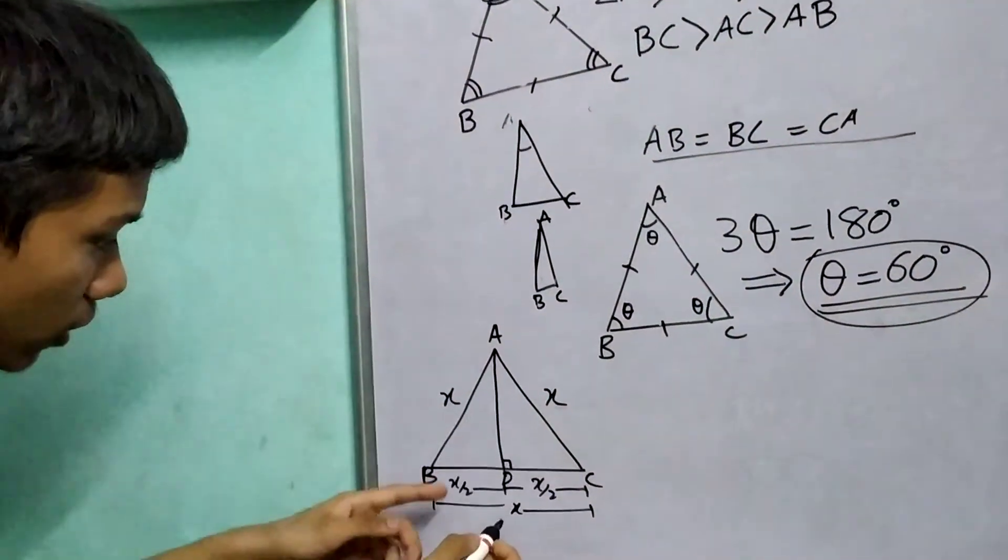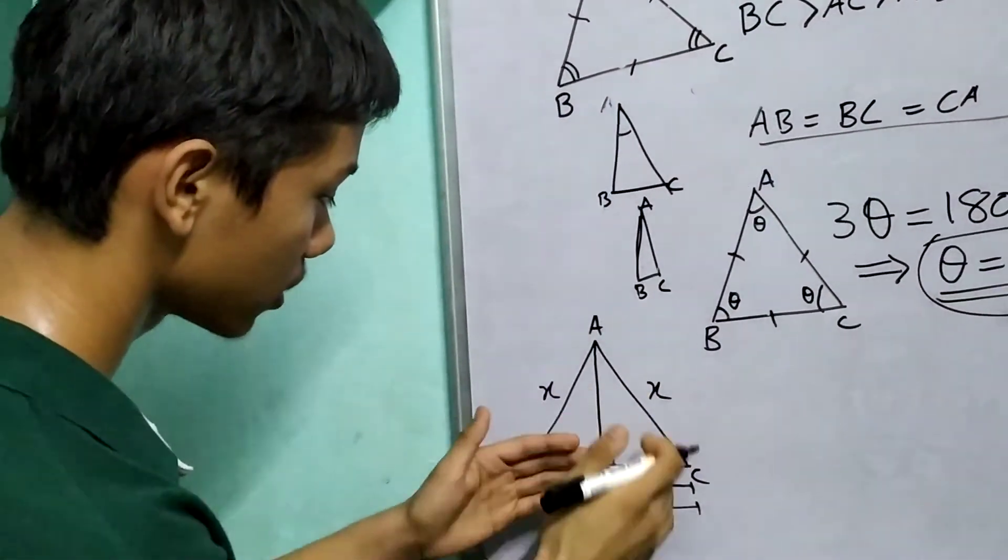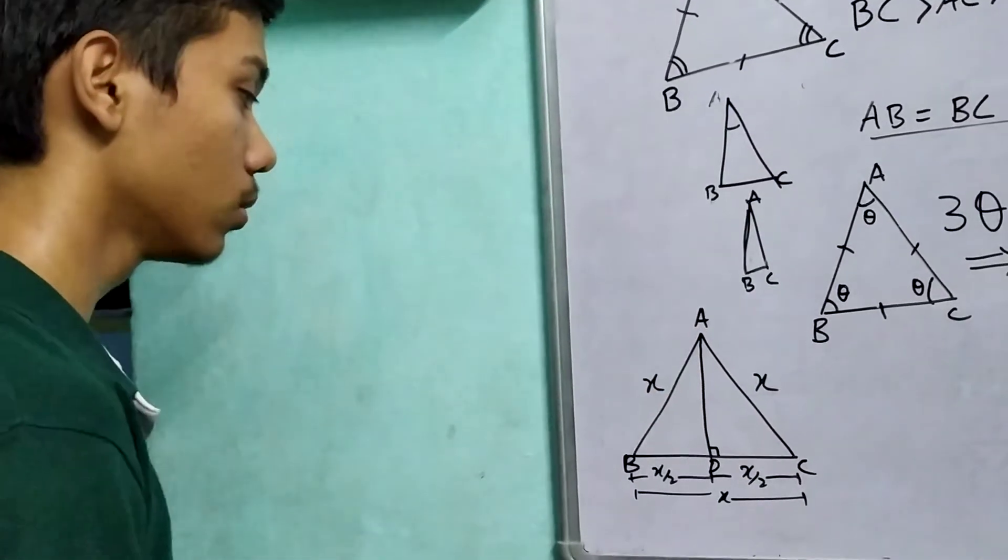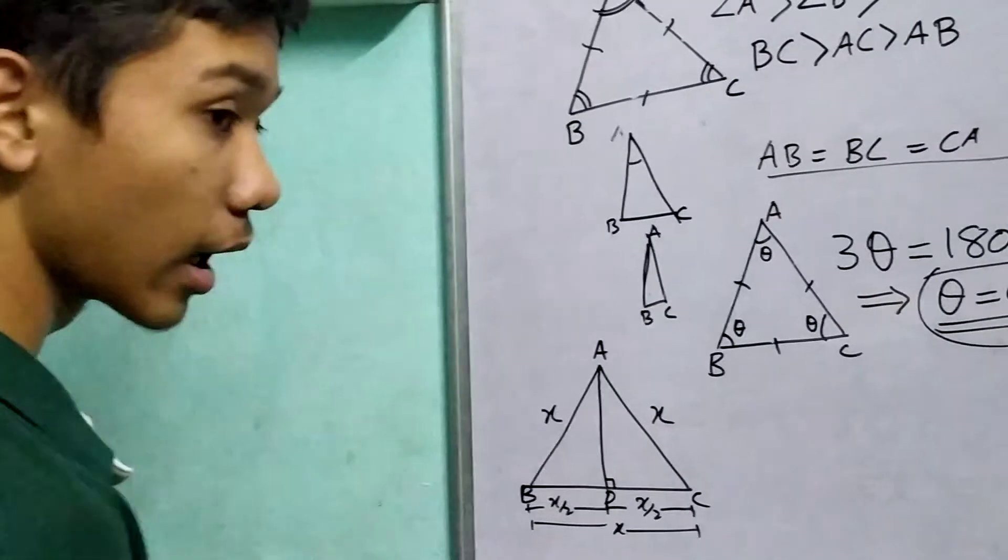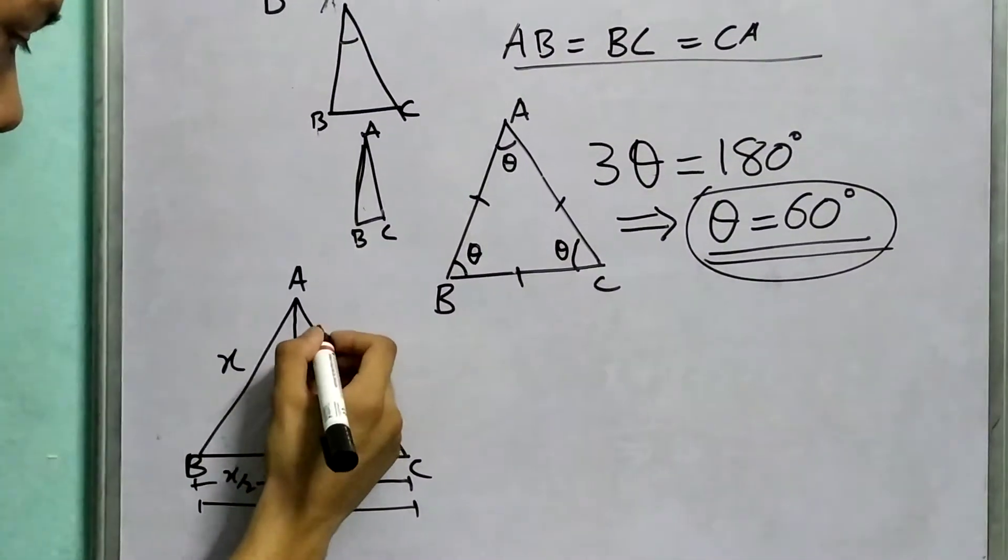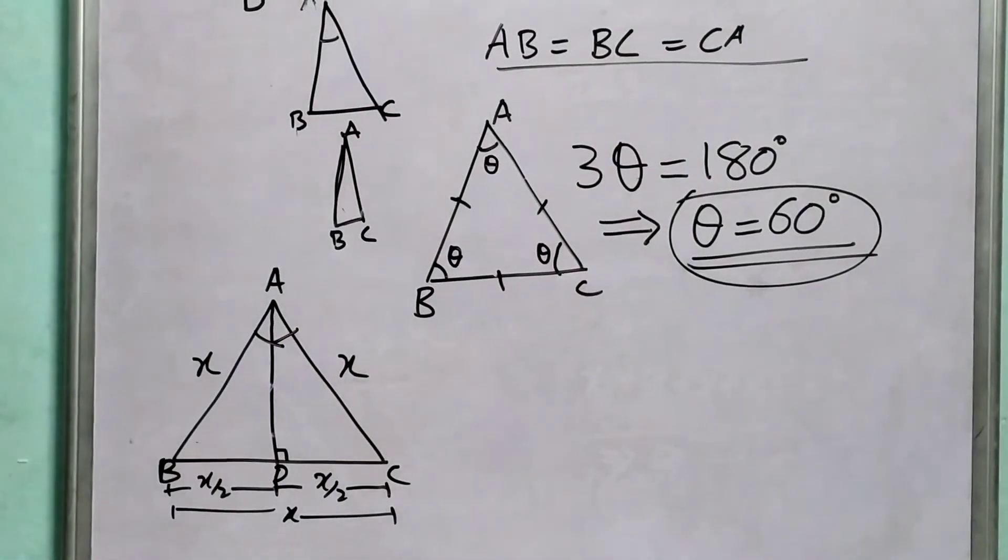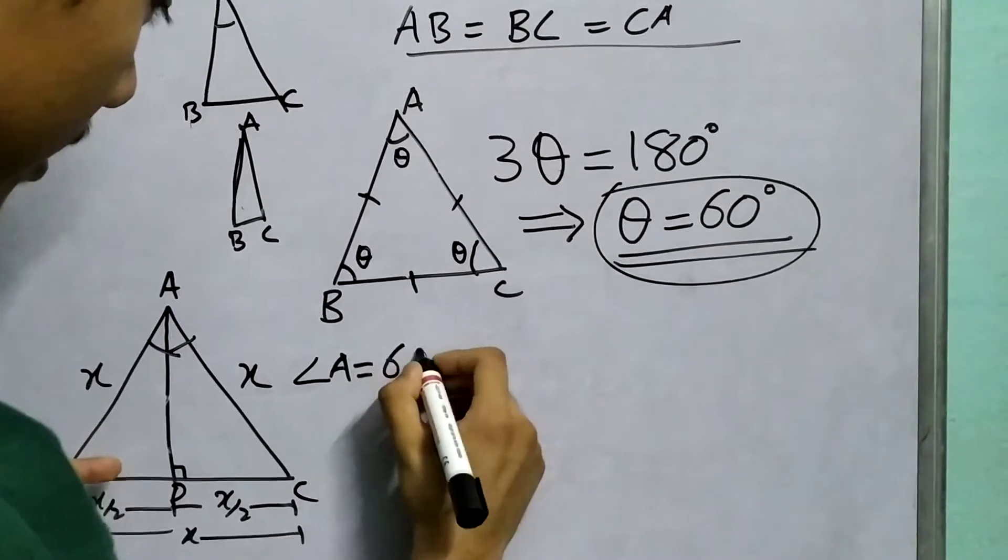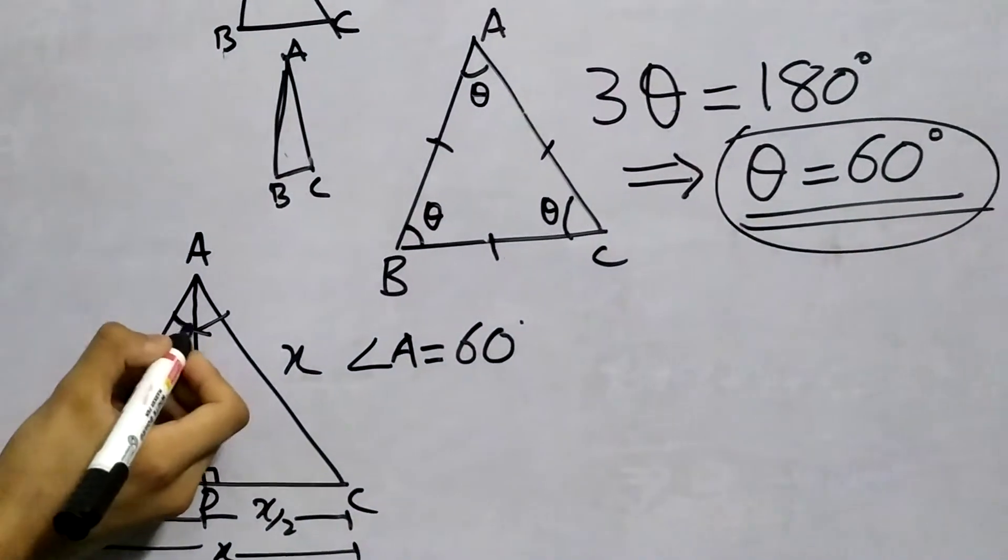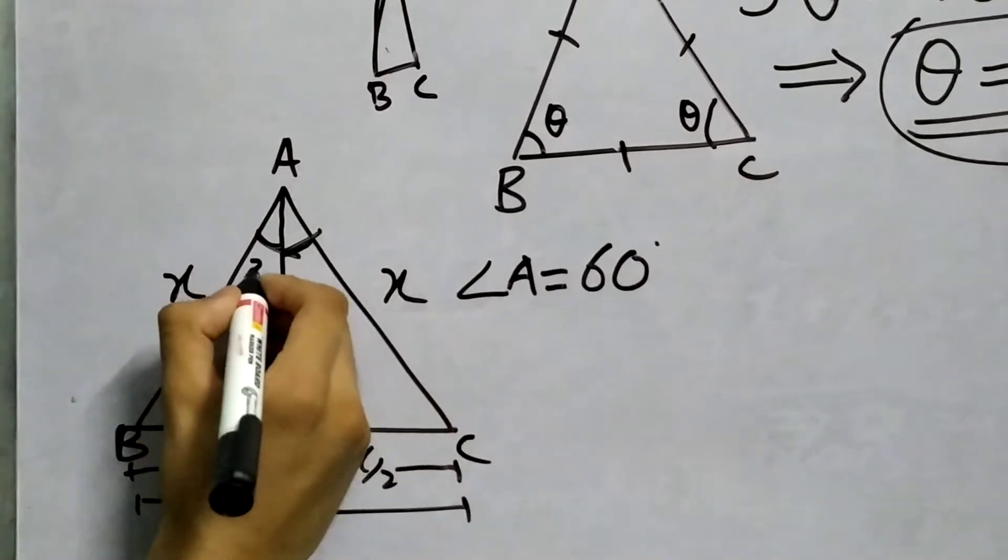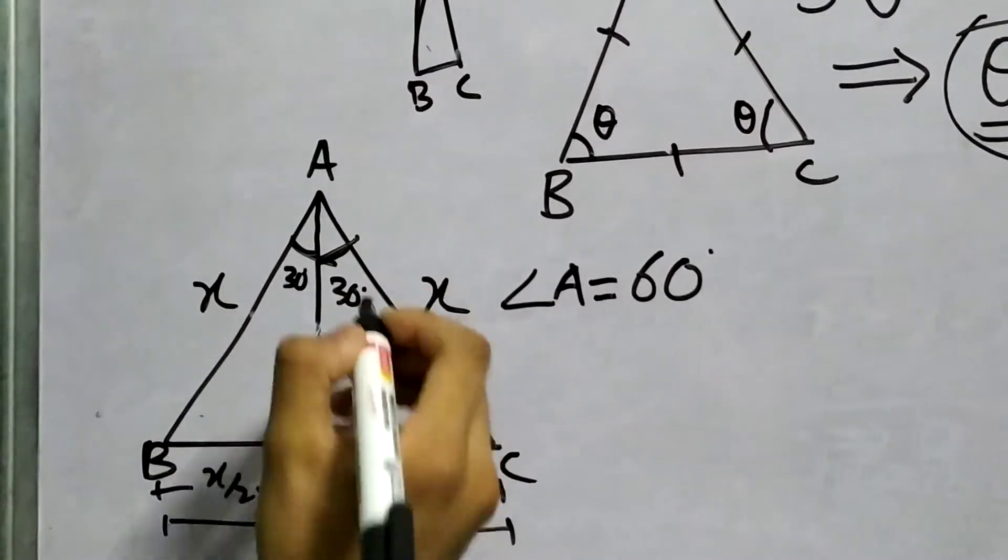This length is also called the median because it divides the opposite side, AD's opposite side, into two equal parts. Another interesting property is that this line AD, the median, bisects this angle. So if angle A is 60 degrees, this angle will be equal to half of A, so this angle will be 30 degrees and this angle will be 30 degrees.